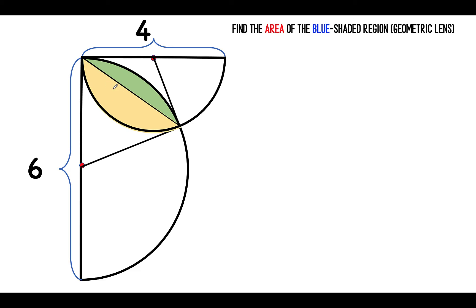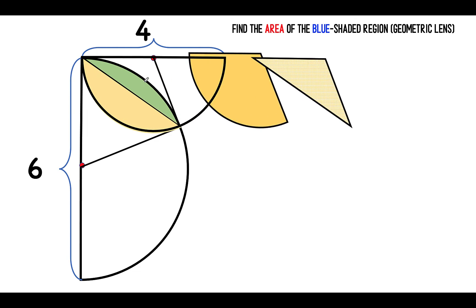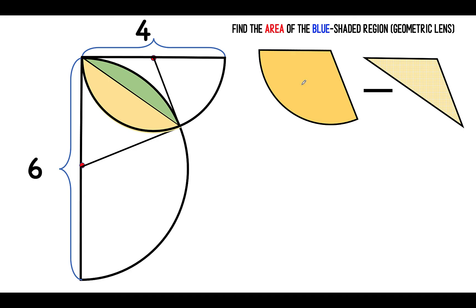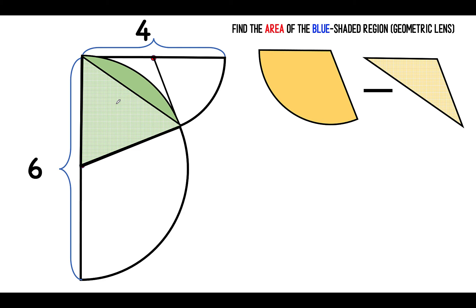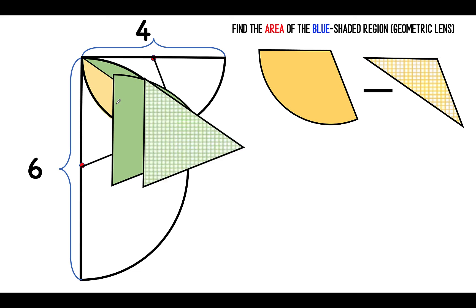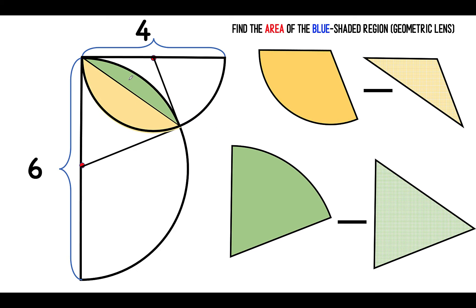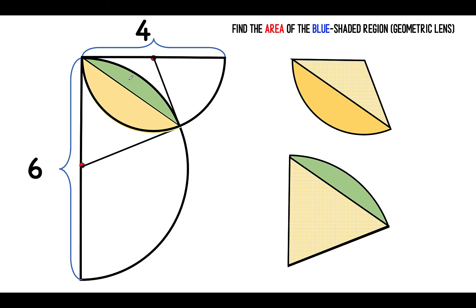Notice that I can find the area of this yellow segment by starting with this sector and then subtracting this triangle. And so we need to find the separate areas of this sector and this triangle in order to find this yellow segment. Similarly, we can find the area of this green sector and subtract the area of this green triangle to find the area of this green segment. So the sector minus the triangle will give us our desired areas.